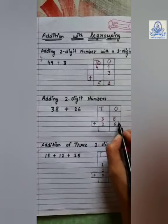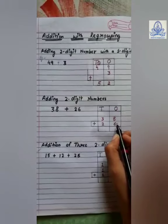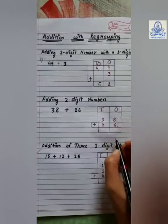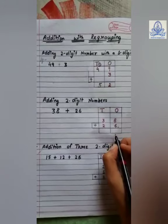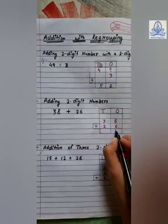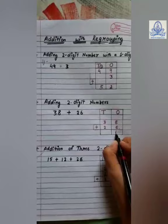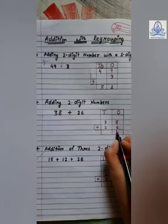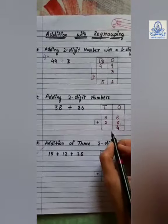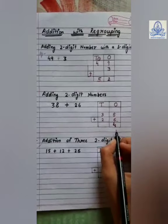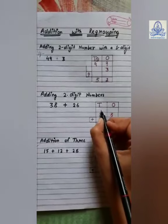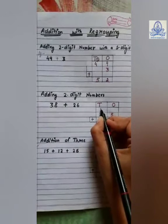Now, we will add the ones digit first. Eight plus six is fourteen. So, four will be written at ones place, and the one of fourteen is transferred to tens place.